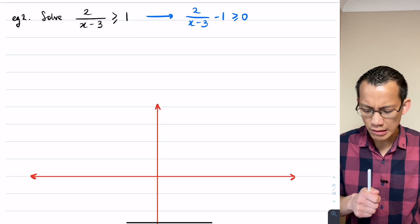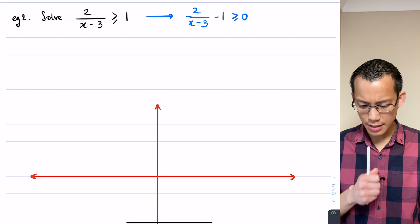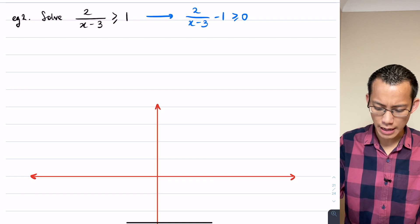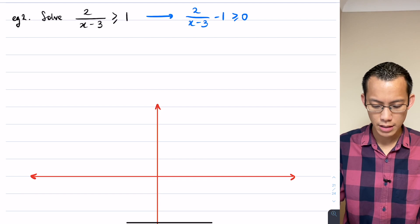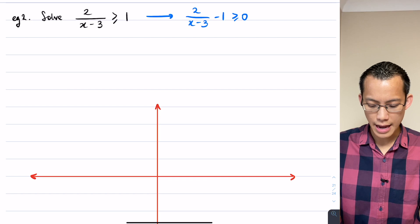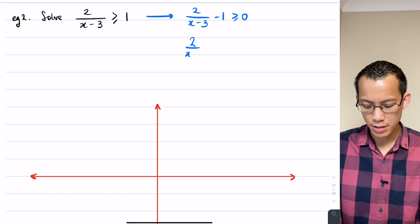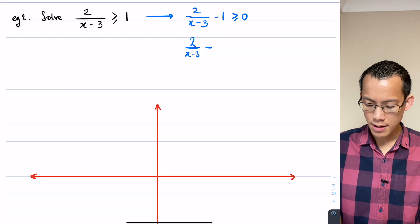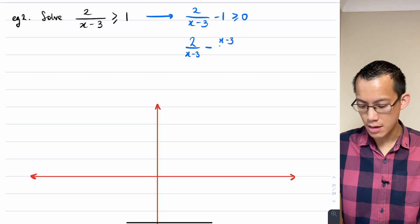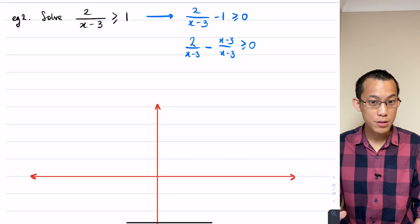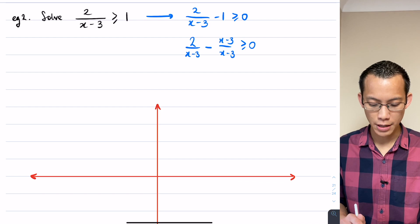I'd look at that and then I'd say, this thing on the left-hand side, what does it actually look like? Well I could try and combine these two things into one. I could try and say it's gonna be 2 on x minus 3 take away x minus 3 on x minus 3 is greater than equal to 0. You could do some algebra here and you could continue simplifying.